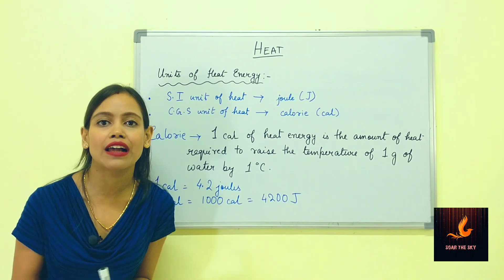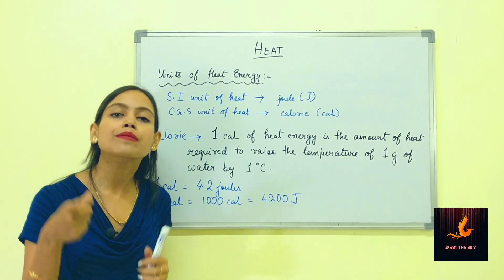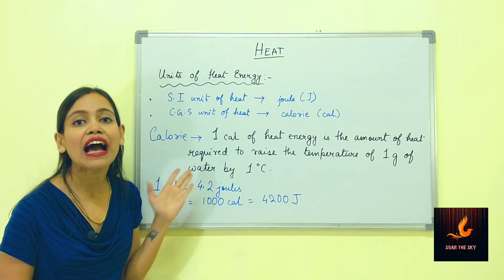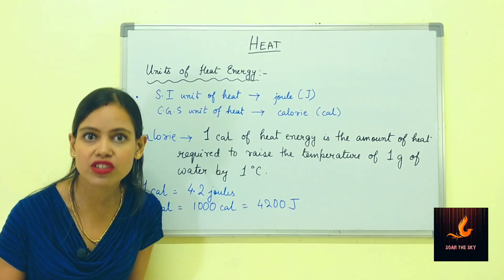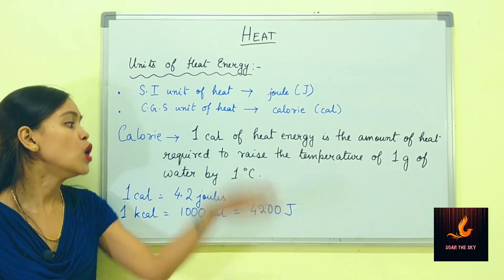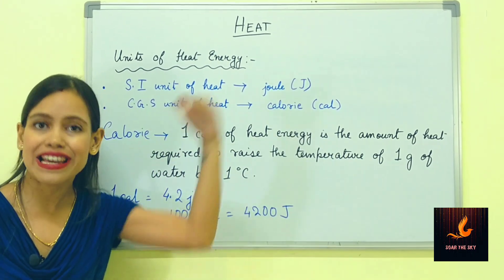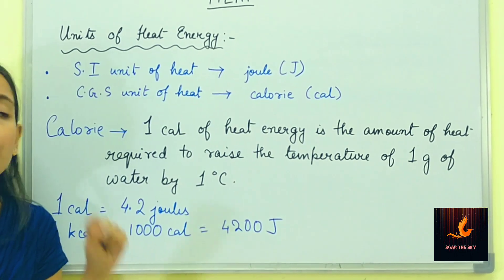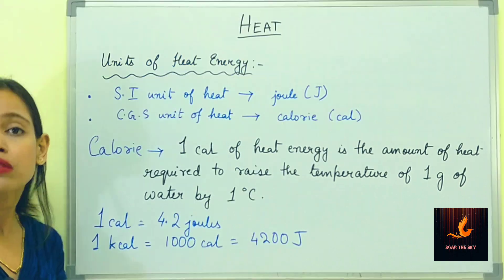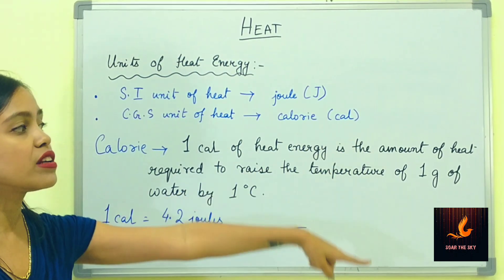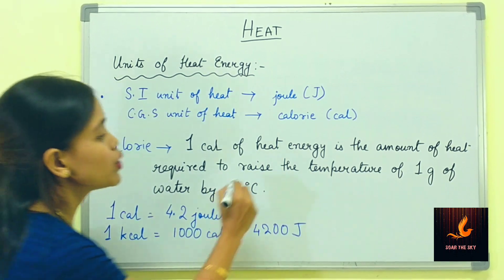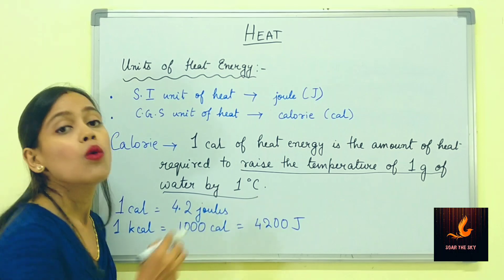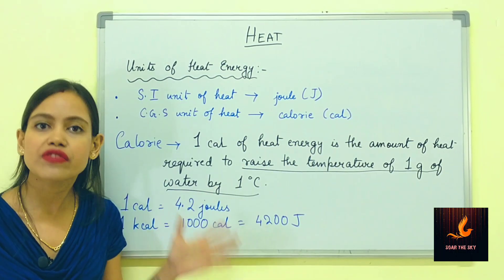The word calorie means heat — it is a very old word. The definition of calorie is: one calorie of heat energy is that particular amount of energy which is required to raise the temperature of one gram of water by one degree Celsius. So one calorie is the amount of heat required to raise the temperature of one gram of water by one degree Celsius.